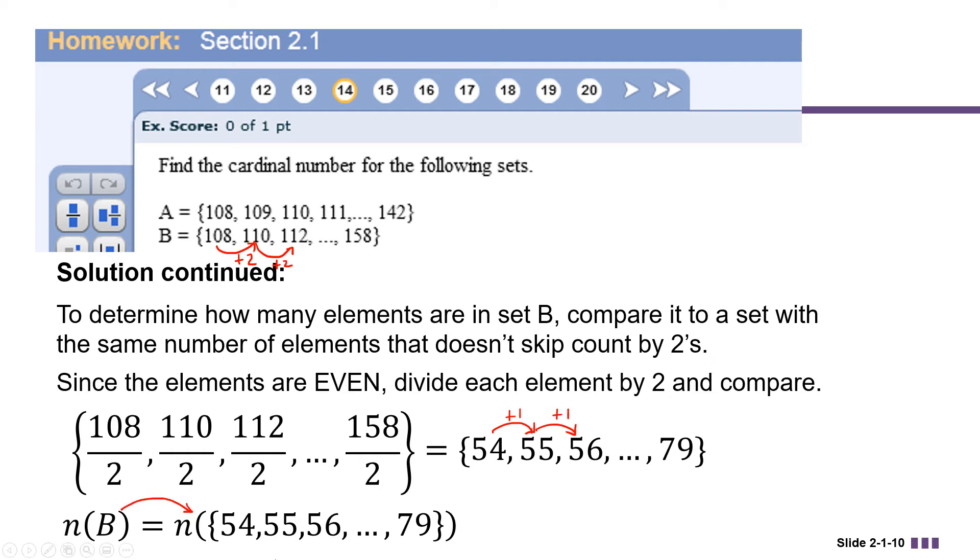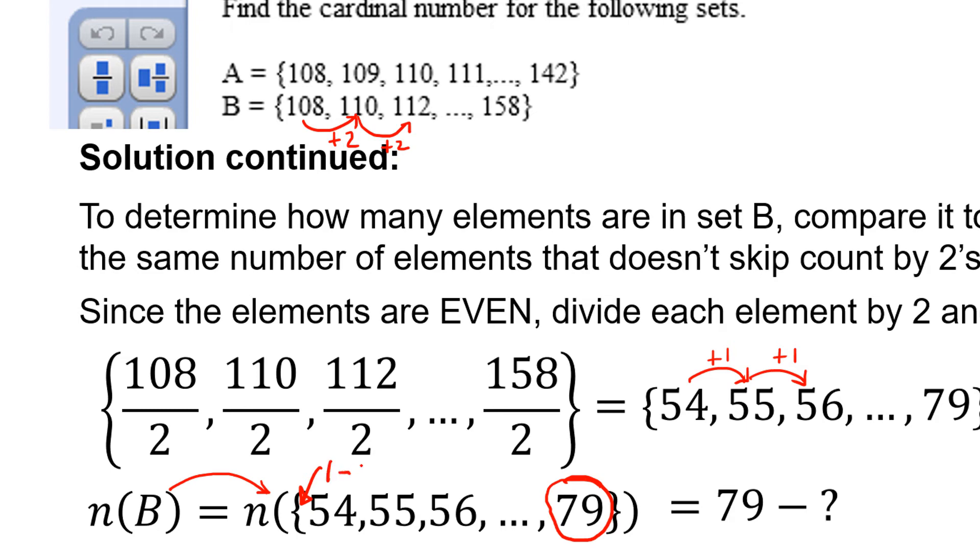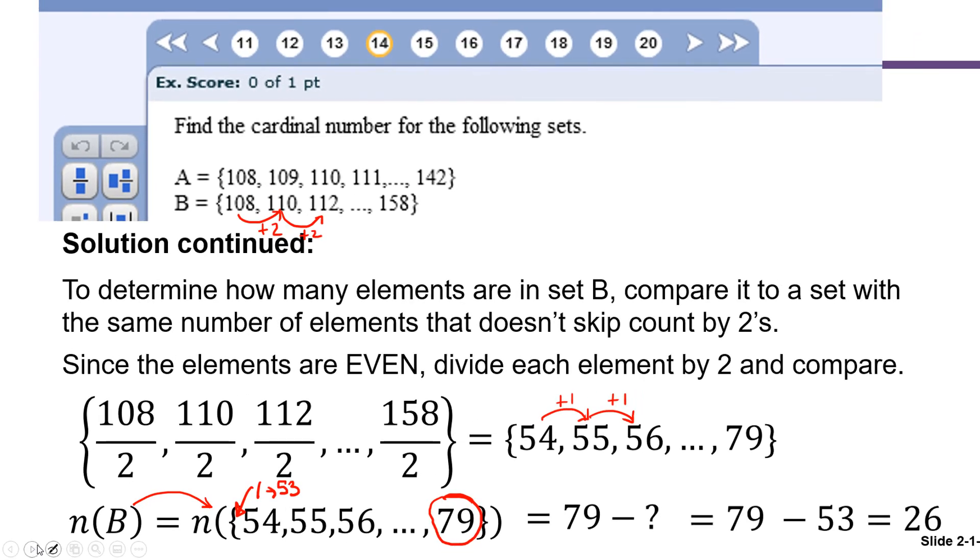So to find the number of elements in B is the same as finding the number of elements in the set 54, 55, 56, dot dot dot, 79. So how do we find the number of elements in that set? Well, when a set increases by one each time, we're going to compare it to the set that goes from one up to 79. So we know that it's going to be fewer than 79 elements, but 79 minus what? For that, we need to figure out what this set is missing at the beginning. At the beginning, this is missing all the elements from one up to 53. So it's missing 53 elements. 79 minus 53 is 26 elements in this set.